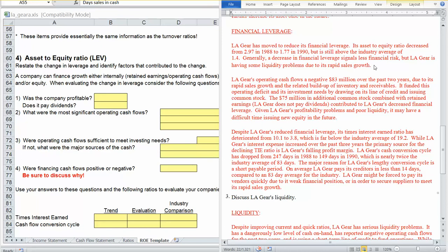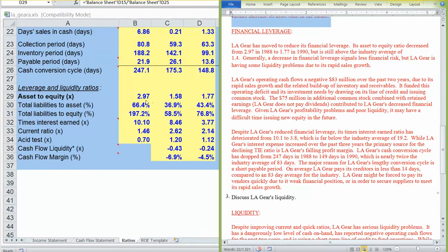Financial leverage is a little bit more difficult. First thing though, make sure you restate the change in leverage and identify factors that caused its change. And we have here, in our case, LA Gear's moved to reduce its financial leverage. Its asset to equity ratio decreased. And again, we want to make sure we compare it to the industry average.